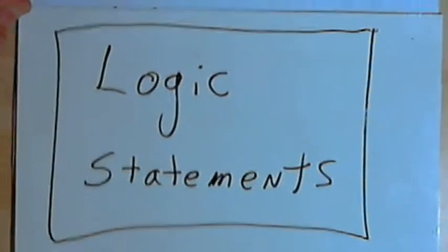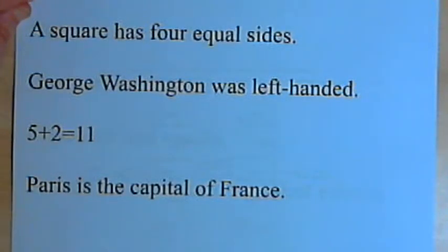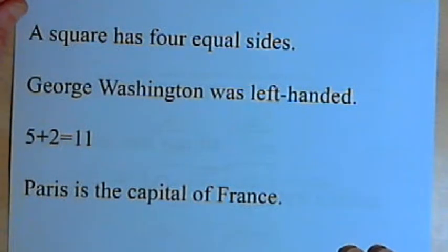So here's some examples of valid statements for a logic argument. I've got a square has four equal sides, George Washington was left-handed, 5 plus 2 equals 11, and Paris is the capital of France.